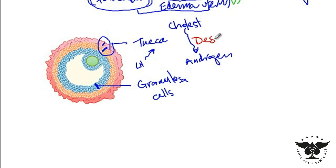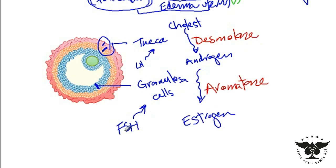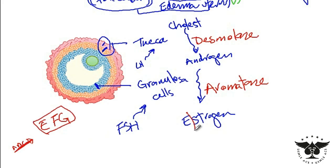The enzyme that converts cholesterol into androgen is desmolase. Then, upon stimulation via FSH, granulosa cells induce the conversion of androgen into estrogen, and the enzyme that does that is aromatase. A mnemonic you can use to remember which cells are associated with which stimulation and hormone is EFG — just like the alphabetic sequence, skip A B C D and go straight to E F G — where E stands for estrogen produced by granulosa cells.